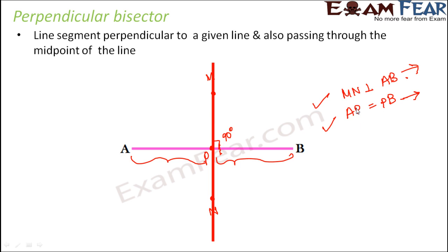The concept here is simple: whenever we draw a perpendicular or a bisector, we always make use of arcs or circles, because circles always have the same radius. When you draw both circles using the same radius, a uniformity is maintained. If you change the orientation of the compass between the two circles, you will never get the perpendicular bisector. So it is very important to maintain the same radius when drawing the two circles with A and B as centers respectively.